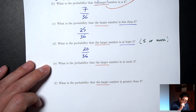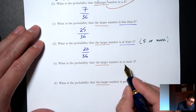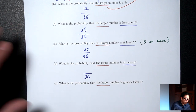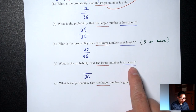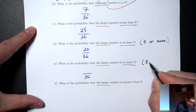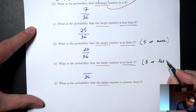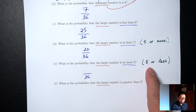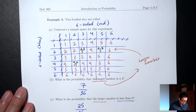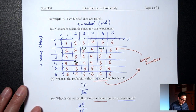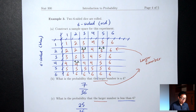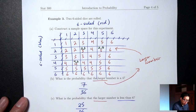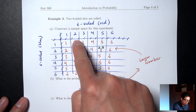Part E: what's the probability that the larger number is at most 3? Bottom is 36. At most 3 means 3 or less. So we count all the 3s, 2s, and 1s: 9 outcomes. Probability is 9/36.